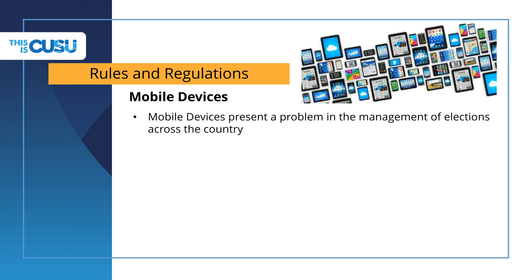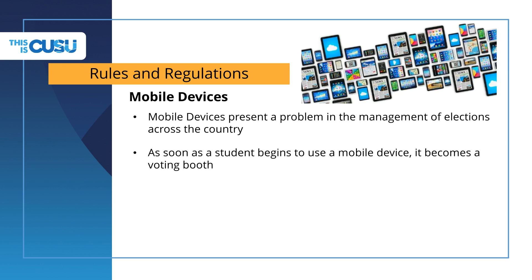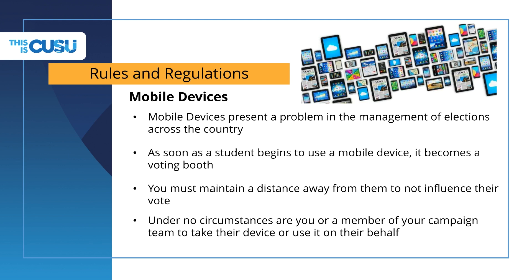Mobile devices present a unique problem in our elections, as every student can use one to vote with — a mobile device can instantly become a voting booth. If you or a member of your campaign team are speaking to a student and asking them to vote on a mobile device, you must step back as soon as they begin to use the device, and you cannot position yourself so the screen is visible. This ensures the student can vote for whoever they choose without risk of intimidation. You must never take a device from a voter, even if they offer it to you. If they are having issues with logins or navigation, please direct them to a voting booth.